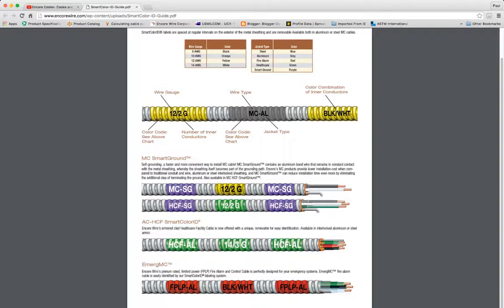Next, in order to make it a healthcare facility grade MC, then what you've got is a green label that was added. That reminds you that yes, it is 12-2, that's still printed on it, but now it has the purple to remind you that it's a smart ground, but they've also changed it and added the HCF to it, which is healthcare facility.